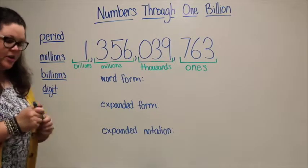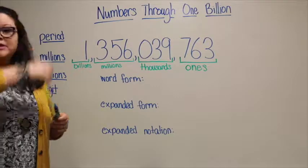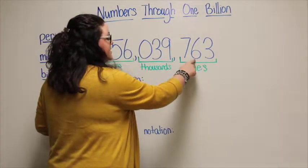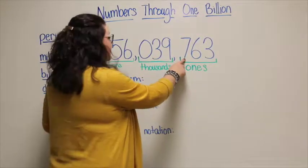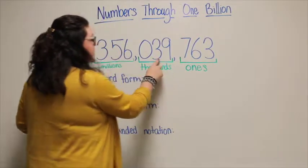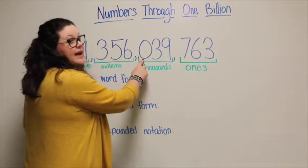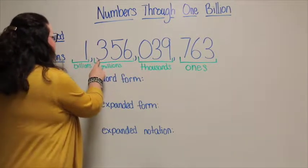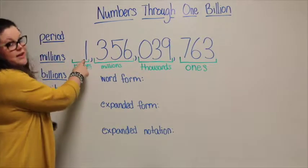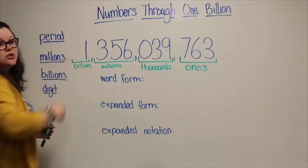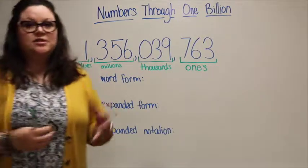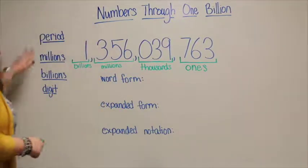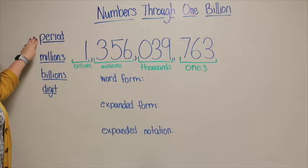Just to refresh, I'm going to go through the names of these place values: ones, tens, hundreds, thousands, ten thousands, hundred thousands, millions, ten millions, hundred millions, billions. And then I would have ten billions and hundred billions, but we're just going to stop at the billions place value today. So that is a period — it's a group of three digits.